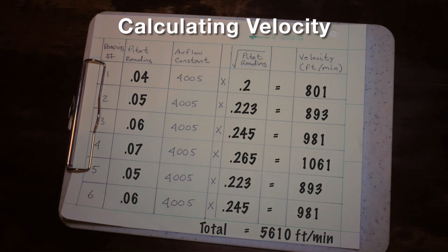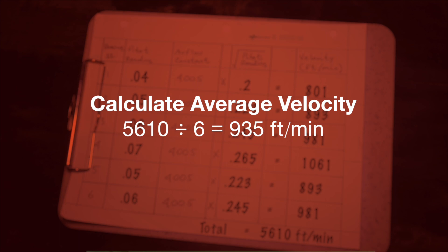After calculating each individual velocity, add them together. In this case, the six velocities add up to 5,610 feet per minute. Divide that sum by the number of measurements taken to achieve the final average calculated velocity. In this example, we divide by six for an average of 935 feet per minute.